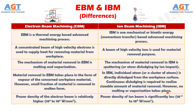Number 5. In Electron Beam Machining, power density of the electron beam is relatively higher, 10 to the power of 3 to 10 to the power of 6 Watt per square millimeter, whereas power density of Iron Beam is significantly less, 10 inverse 2 to 10 Watt per square millimeter.